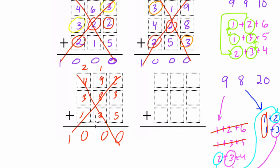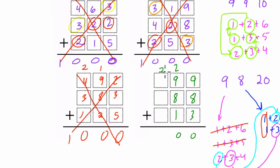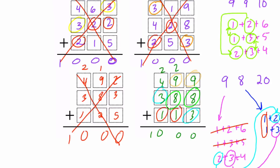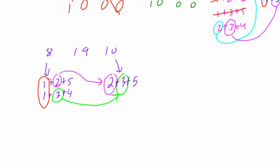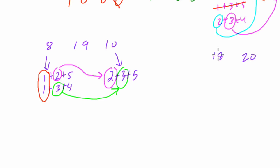The fourth and final way: ones sum of 20, tens sum of 18, hundreds sum of 8. For example: 9+8+3 for 20, 9+8+1 for 18, and 4+3+1 for 8 — but with lots of repeated digits. There are seven ways to make 18: 9+8+1, 9+7+2, 9+6+3, 9+5+4, 8+7+3, 8+6+4, and 7+6+5. Can we combine these with a sum of 20 and sum of 8 without repeating digits?